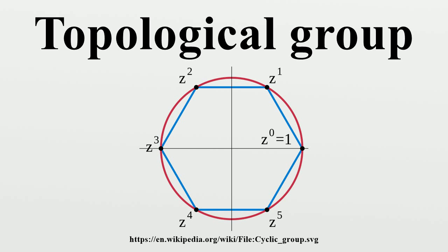Relationship to other areas of mathematics: A compact group is a topological group whose topology is compact. Compact groups are a natural generalization of finite groups with the discrete topology and have properties that carry over in significant fashion.